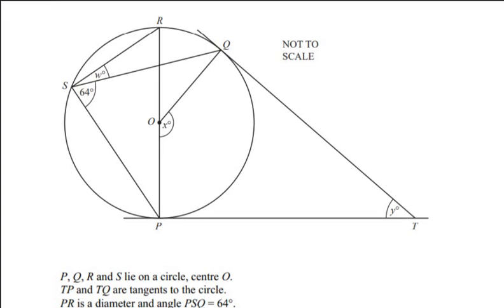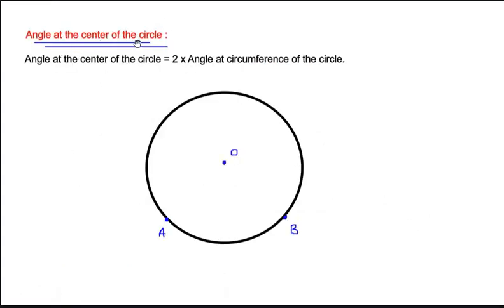Let us first find out the value of angle x by using a circle theorem. The circle theorem we are going to use to find x is the angle at the center of the circle. I have drawn a circle with two points A and B on the circle, and the center of the circle is given as O.